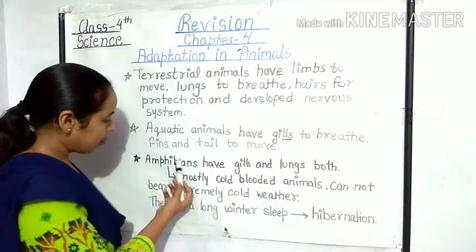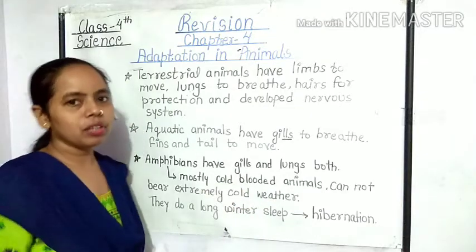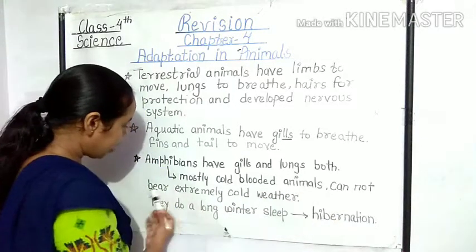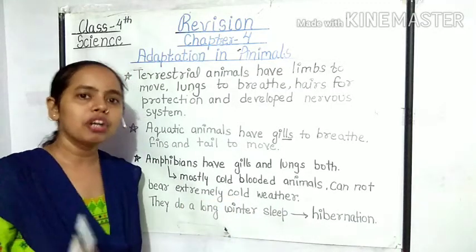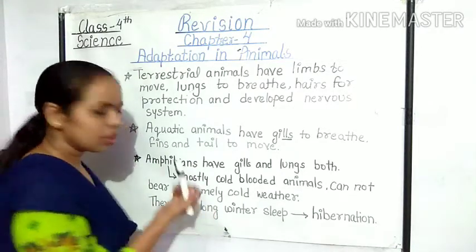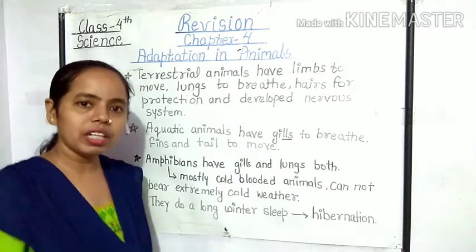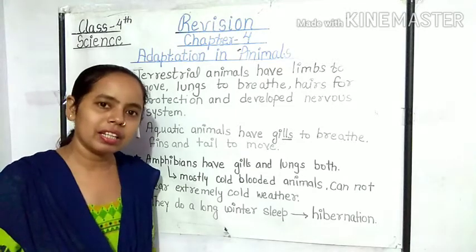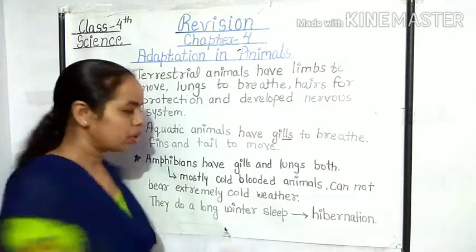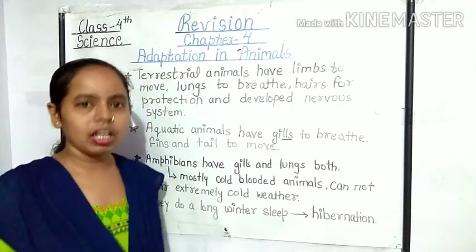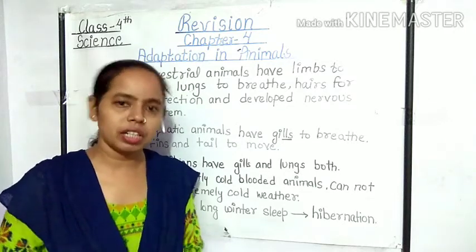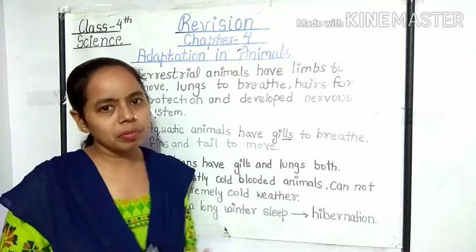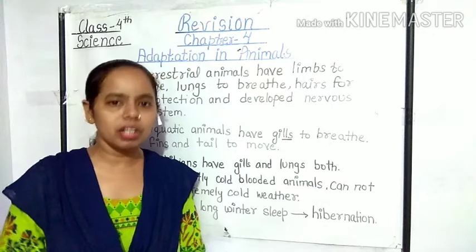Amphibians are mostly cold-blooded animals. बेटा, यह जो amphibians होते हैं इनका जो blood होता है वो बहुत ही ठंडा होता है, इसलिए they cannot bear extremely cold weather। जब बहुत ठंडा weather आता है तो वो उसको सहन नहीं कर पाते। During winter season they take a long winter sleep — बेटा winter season में amphibians लंबी नींद ले लेते हैं। इसी लंबी नींद लेने के process को हम hibernation बोलते हैं। So what is hibernation? A long winter sleep is known as hibernation.